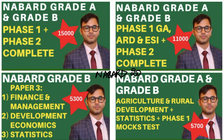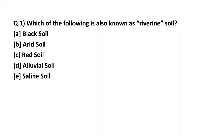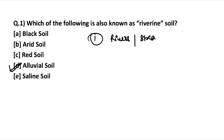Now let's begin with the very first question. Which of the following is also known as riverine soil? The answer is alluvial soil. The reason alluvial soil is called riverine is because it flows from fertile land and gets deposited by rivers or streams. Therefore, this soil is known as riverine soil.